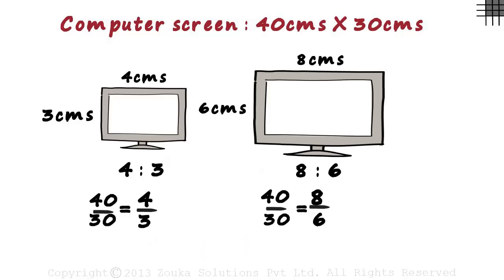All the three ratios 40 by 30, 4 by 3 and 8 by 6 are actually equal. We just changed the numerator and the denominator based on the requirement.